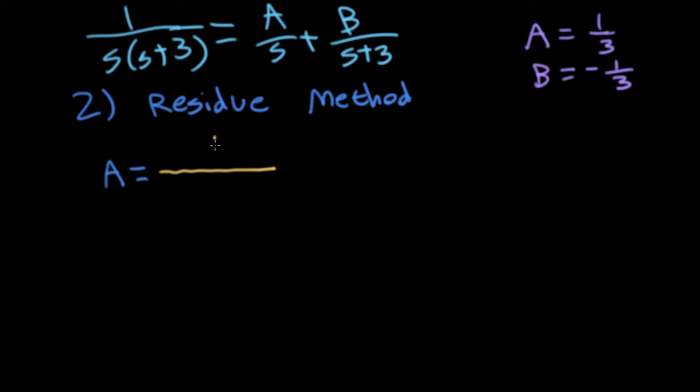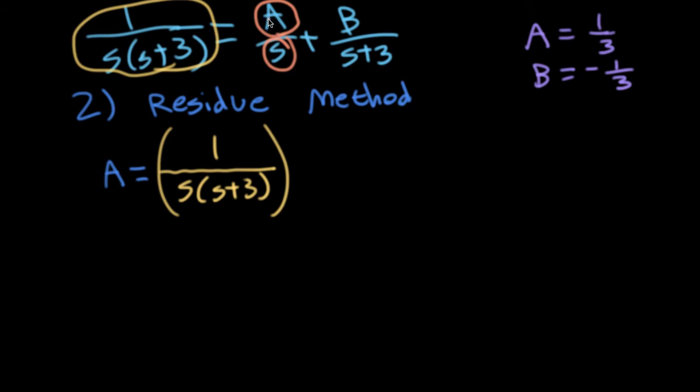So here's how the technique works. I'm going to write down the expression that I'm trying to expand, which is on the left hand side here. And now I'm going to multiply it by the denominator of the term that I'm finding the coefficient for. So I'm finding the coefficient for A, so I'm going to multiply it by s. And then I'm going to evaluate it at the root of this denominator. And that root is what makes that denominator be zero. So here I'll write s equals zero.